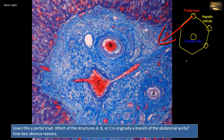The portal tract contains a terminal branch of the portal vein, a terminal branch of the hepatic artery, and a bile ductule, or a tributary of the bile duct. They also contain lymphatic vessels, but since the walls of lymphatic vessels are delicate and often collapsed, they are less easily identified.